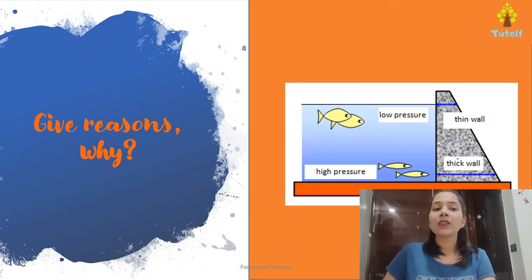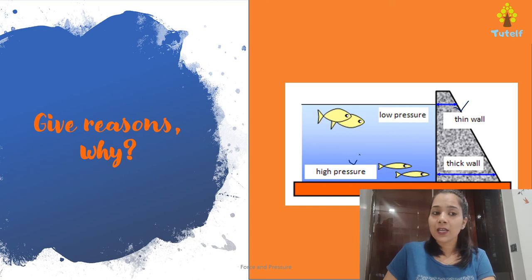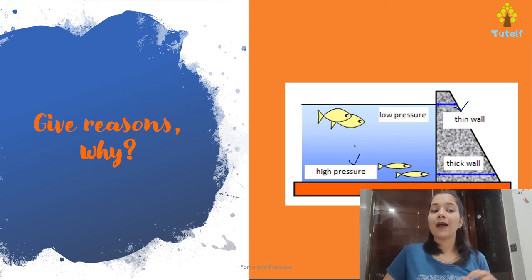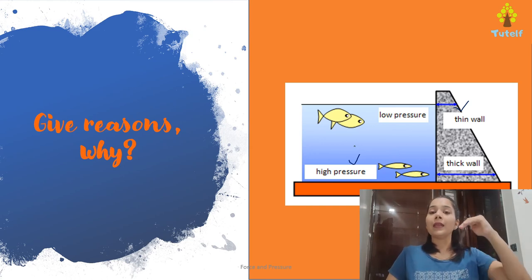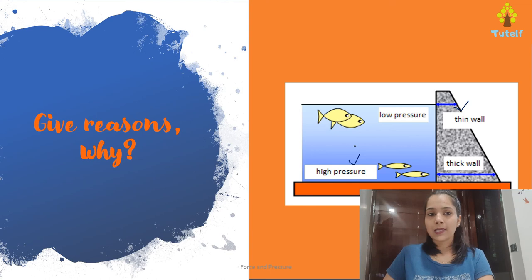Dams have thick walls at the base compared to thin walls at the top. This is because at the base the pressure is high, and to sustain that high pressure we need thick walls. We know that as depth increases, liquid pressure also increases continuously.